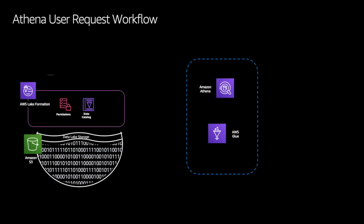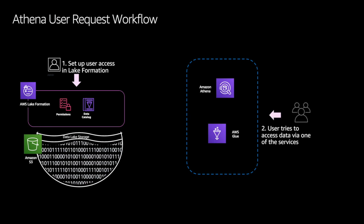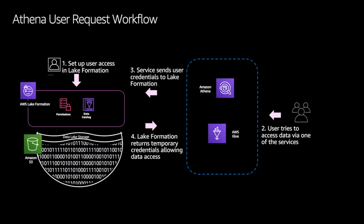Let's see what happens when a query is initiated in Amazon Athena. As a first step, you will have to register the Amazon S3 bucket inside AWS Lake Formation. Once you register the bucket, you can set up user access and entitlements for this data. When the user tries to initiate a query to access this data via Amazon Athena, it sends the user credentials to AWS Lake Formation. Once the credentials are validated, AWS Lake Formation provides a temporary token to access this data, and then the data is returned back to the user based on the temporary token.